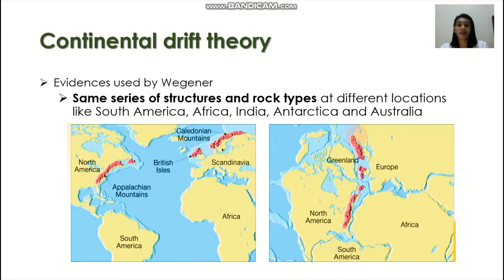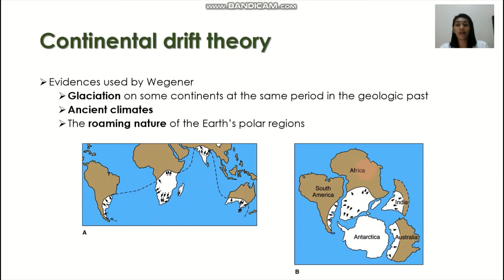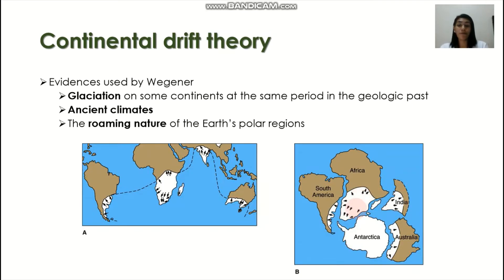Another evidence is the same series of rock structures and rock types found at different locations like South America, Africa, India, and Antarctica. Other evidences include glaciation on some continents during the same period in the geologic past, as well as ancient climates and the roaming nature of the Earth's polar regions. The arrows in this image represent all the movement as proposed by Wegener.